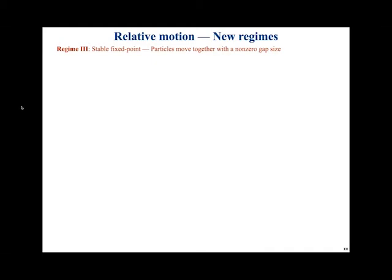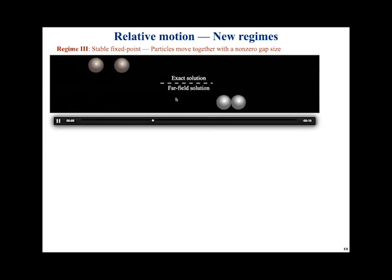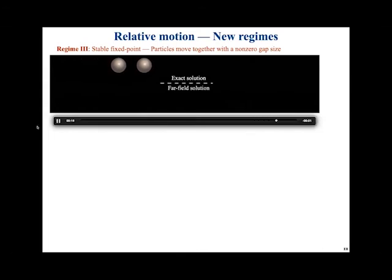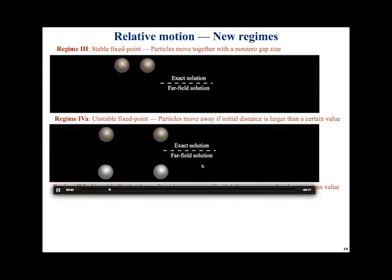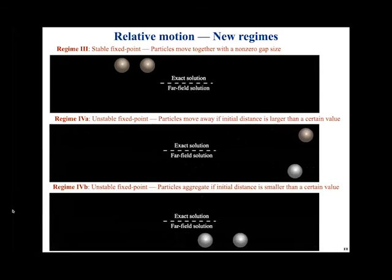Regimes three and four indicate fixed points in the dynamical system. Regime three has a stable fixed point: particles attract from far away, but the interaction becomes repulsive as they approach, so they settle at a non-zero gap size and move together — whereas far-field predicts collapse. Regime four has an unstable fixed point: when particles are far, far-field does a good job, but if pushed close enough, the interaction switches to attractive and the particles collapse and swim very fast, while far-field still predicts indefinite separation.